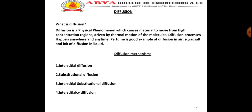Substitutional diffusion: the impurity atoms move through the crystal lattice by jumping from one lattice site to another. This mechanism requires the adjacent site to be vacant. Interstitial-substitutional diffusion: the impurity atom moves through interstitial as well as lattice sites in this case.